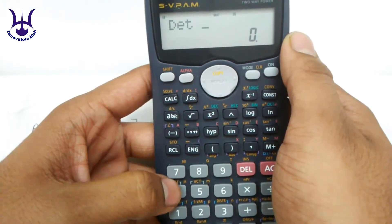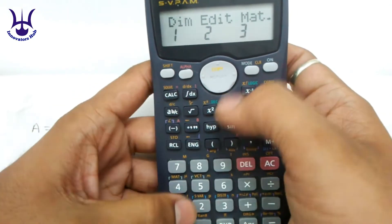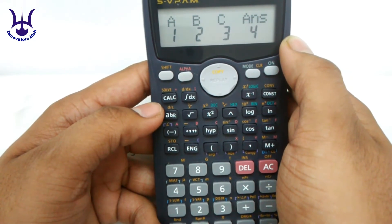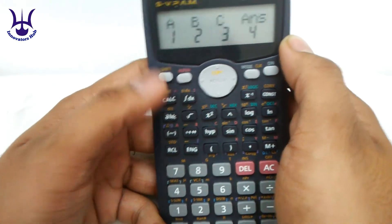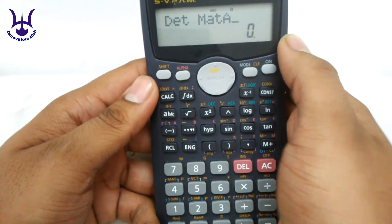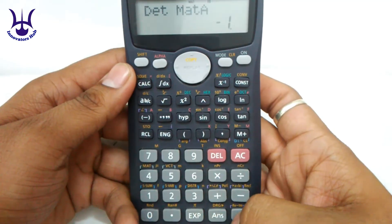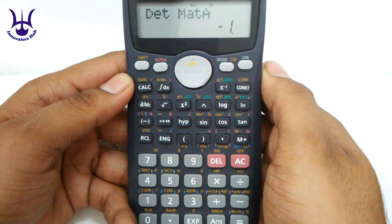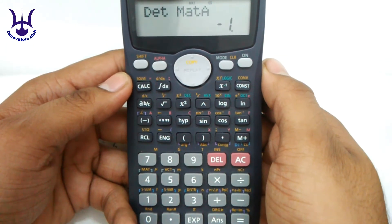Now again we have to press shift and 4. This time we have to select the matrix, that is the 3. Now we have selected A, that is 1, as our input matrix. We have fed the value of the whole matrix in matrix 1. So we have selected matrix 1 and press equal to, you'll get the answer.